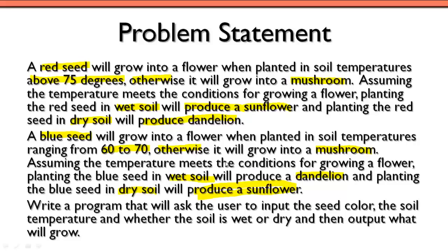We've got to write a program that will ask the user to input the seed color, then the soil temperature, and finally whether the soil is wet or dry — basically the soil moisture. Then we need to output what will grow: is it going to be a mushroom, a dandelion, or a sunflower? Those are the three choices. We've analyzed the problem statement, we know what our inputs are, the conditions, and what will grow under each condition.